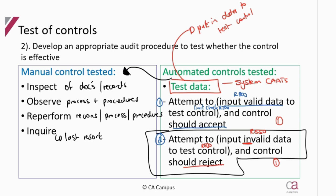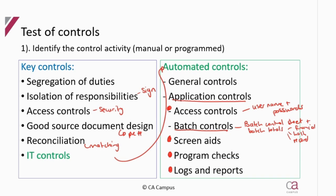For example, testing access controls: attempt to gain access using a fictitious username and password — you should not be allowed in. For a mandatory field screen aid: attempt to continue without completing all required fields — the system should not allow you to proceed. These are the kinds of test data procedures you would describe for automated controls.